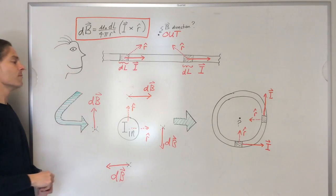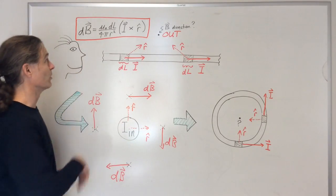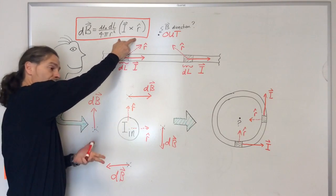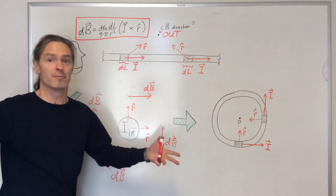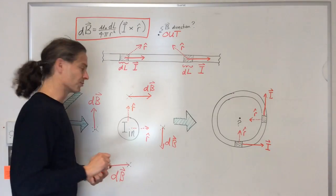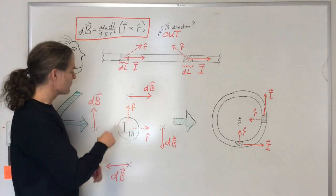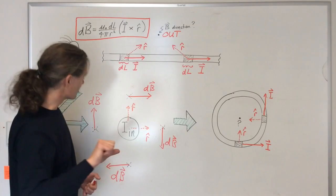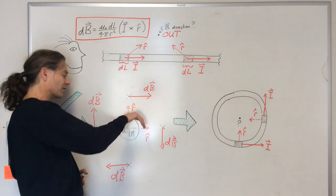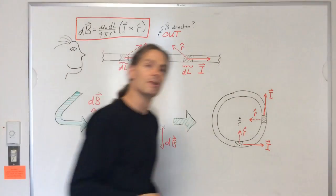So now we have two right-hand rules on the table. The first is the fundamental right-hand rule associated with the cross product. The second is a derived shortcut right-hand rule that's specific to straight current segments: stick your thumb of your right hand in the direction of the current segment, and your fingers wrap around in the sense that the magnetic field wraps around the segment.